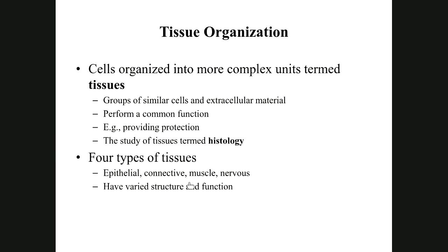Muscle tissue is specialized to contract and produce movement — those are two key parts of its definition. It shortens, and in the process of shortening it creates movement. There are three types of muscle: skeletal, cardiac, and smooth.